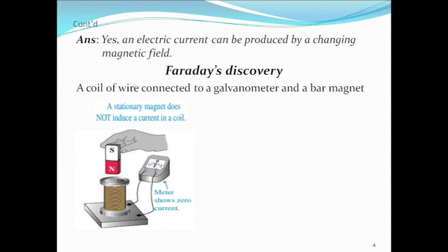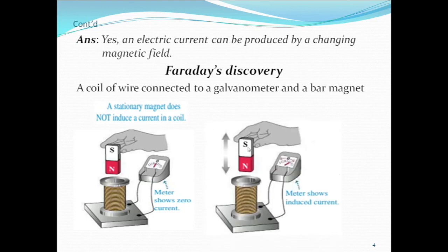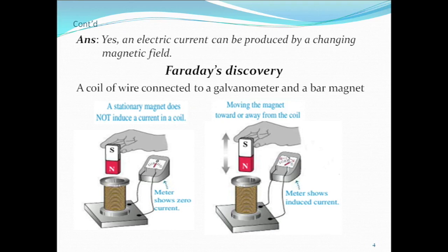A stationary magnet does not produce any current in the coil. But by moving the magnet, the number of lines of force changes — these lines of force are represented by magnetic flux. So by moving the magnet up and down, we change the flux through the coil. By changing the magnetic flux that cuts through the coil, we induce a current. The existence of current is shown by the deflection of the galvanometer.